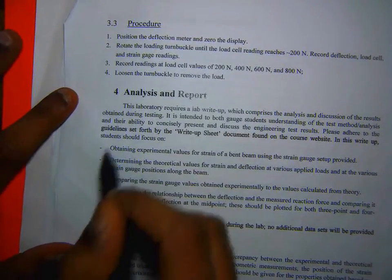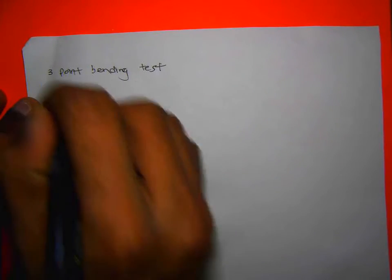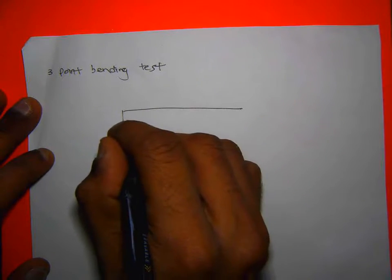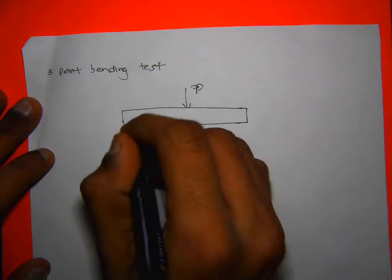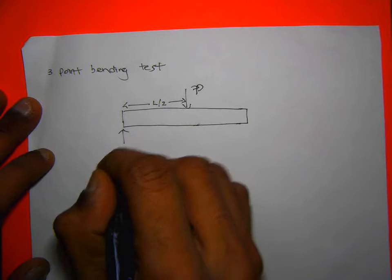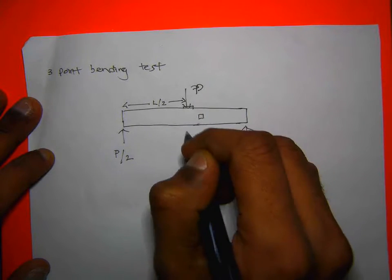Let me go over a few things — the equations — and then look in detail at what's actually asked in the manual. Let's take the three-point bending case. The schematic has P/2 at each support and a load P at the center. The sets were labeled 1, 2, 3, 4, with a coordinate system defined accordingly.